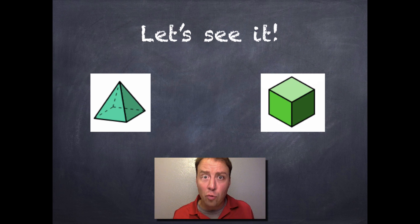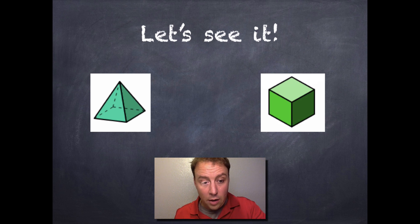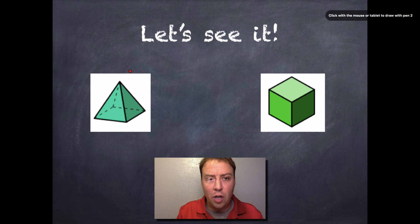And then a cube, if you've ever rolled a dice, well, then you've rolled a cube, right? Dice, six-sided dice at least, are cubes. So let's talk about where the faces of these shapes are.